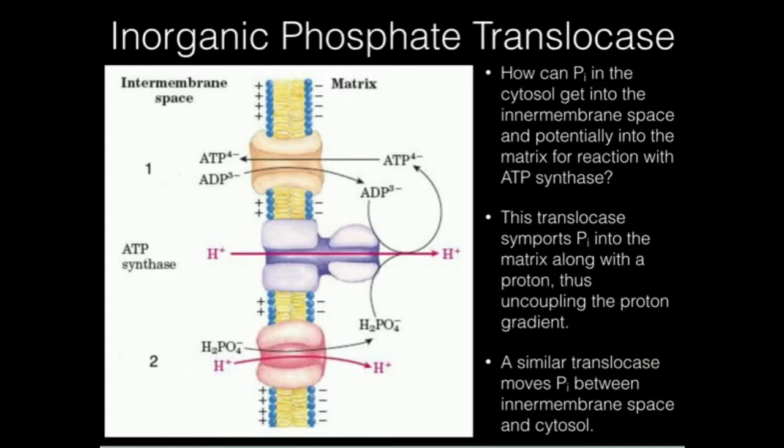Now remember, the proton pumps—complexes 1, 3, and 4 of the respiratory chain—pump protons from the matrix into the intermembrane space. So they create that proton gradient where the concentration of hydrogen ions is really high in the intermembrane space and pretty low relatively in the matrix.